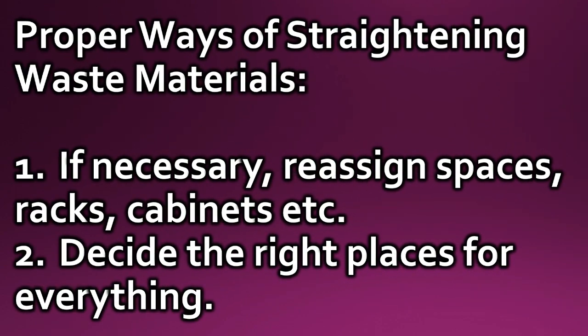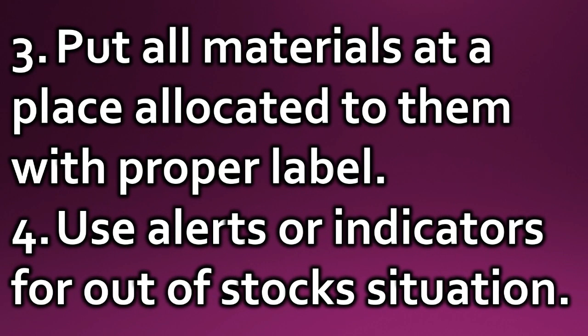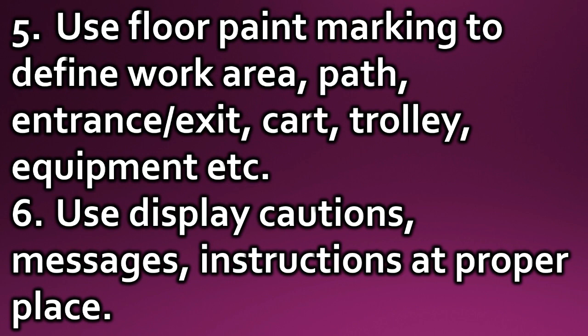Proper ways of straightening waste materials: One — if necessary, reassign spaces, racks, cabinets, etc. to decide the right places for everything. Three — put all materials at the place allocated to them with proper labels, use alerts or indicators for out-of-stock situations. Five — use floor paint markings to define work areas, paths, entrances/exits, cart/trolley/equipment areas. Six — use display cautions, messages, and instructions at the proper place.